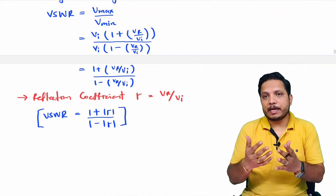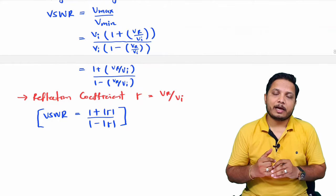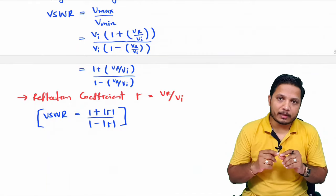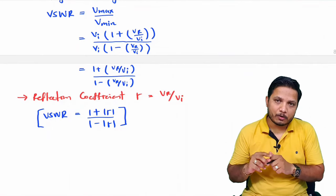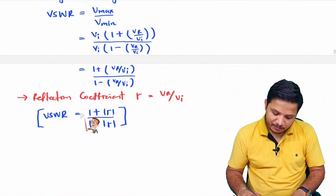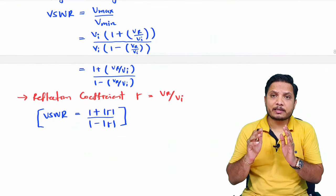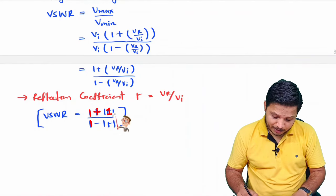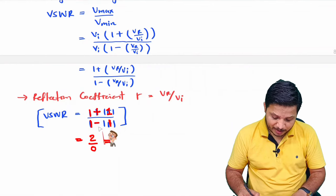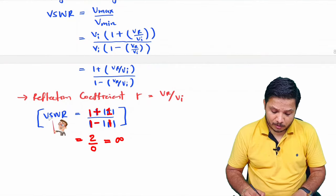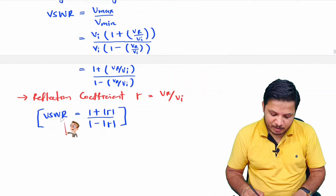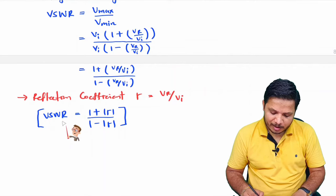The reflection coefficient range is from 0 to 1. If ρ equals 0, VSWR equals (1 plus 0)/(1 minus 0) = 1. If ρ equals 1, VSWR equals 2/0, which is infinite. Therefore, the VSWR range is from 1 to infinity — minimum VSWR is 1 and maximum VSWR is infinite.